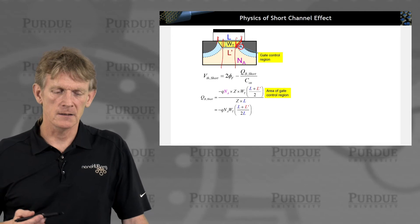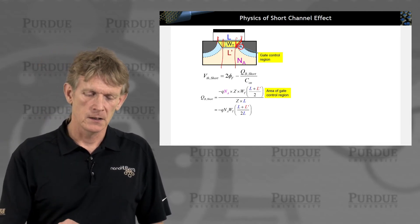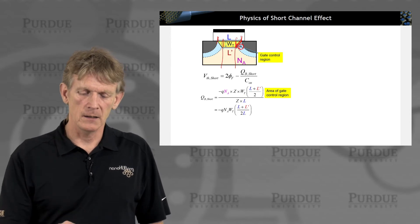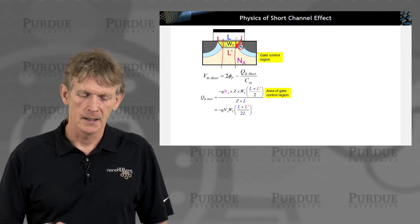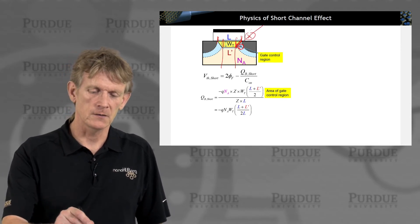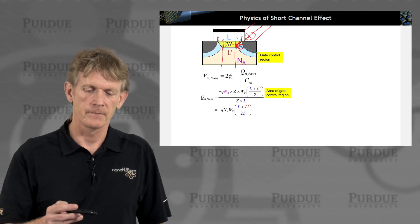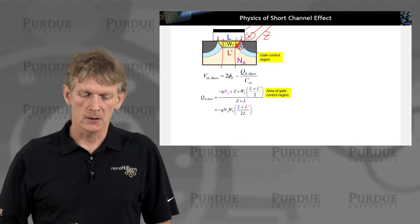Let's calculate the area of this trapezoid. The area of the trapezoid is the height of it, and (L + L')/2, so that's just the average. Z is the depth of this transistor in this direction. That's where we can pick up some finite Z.